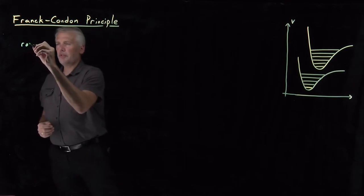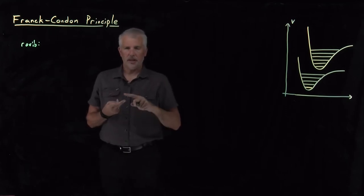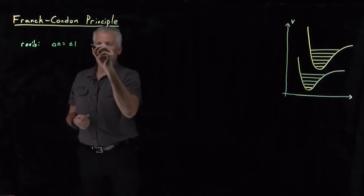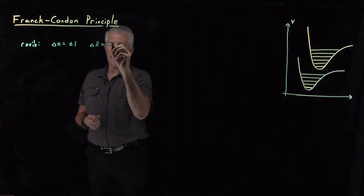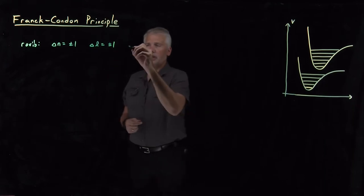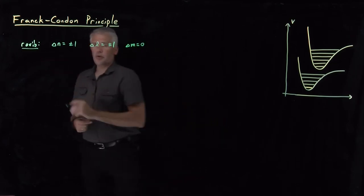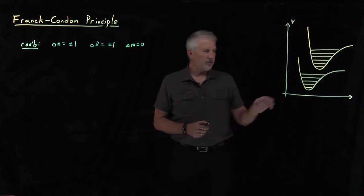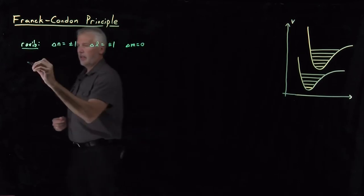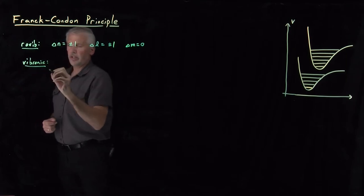Remember, for ro-vibrational transitions, there were some selection rules. If we're simultaneously changing the rotational state and the vibrational state of the molecule, the selection rules were that the vibrational state had to change by plus or minus 1, the angular momentum quantum number defining the rotational state had to change by 1, and the magnetic quantum number is not allowed to change. Those were our selection rules for ro-vibrational transitions. If we're simultaneously changing electronic states and vibrational states, there are also selection rules to worry about.